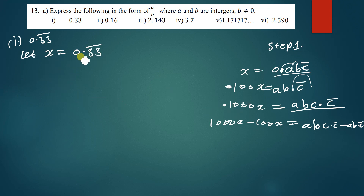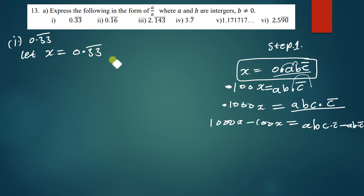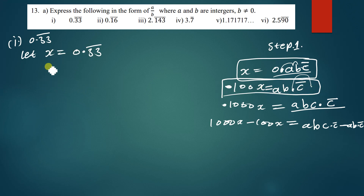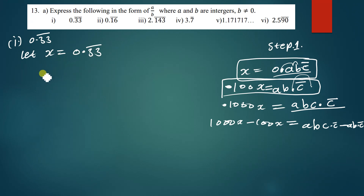Now let's apply these steps to 0.33 repeating. Since there are no non-repeating digits after the decimal point, we skip the first stage and go straight to covering the repeating numbers. We have two repeating digits, so we move the point two times, meaning we multiply by 100. So 100x = 33.33̄.